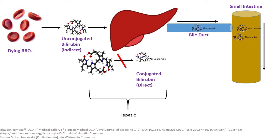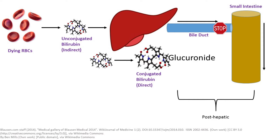A hepatic problem would be evidenced by the inability of the liver to conjugate the bilirubin to a glucuronide moiety. This might be caused by cirrhosis. A post-hepatic problem would be caused by the liver being unable to get the bilirubin through the bile duct. This might be caused by a stone blocking the duct or drugs that cause cholestasis.